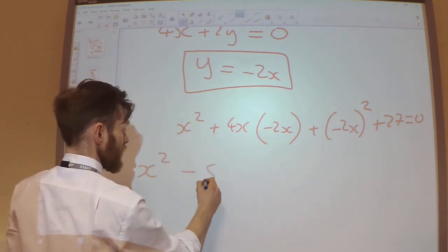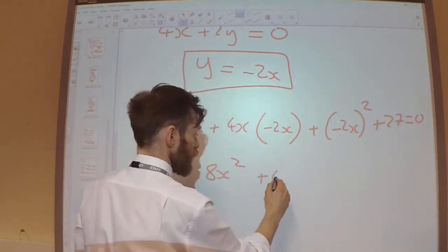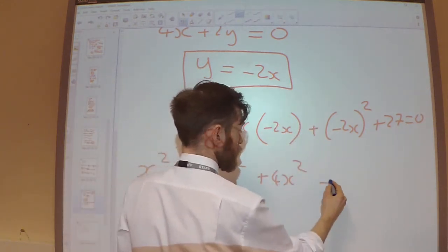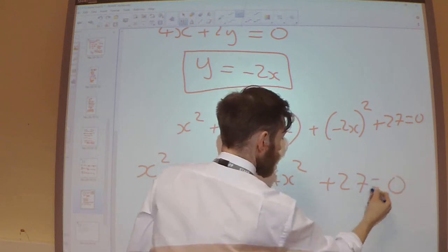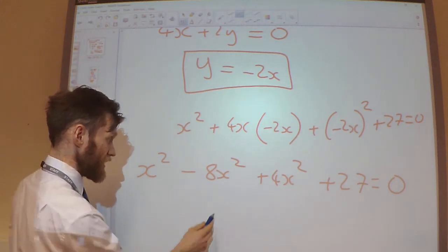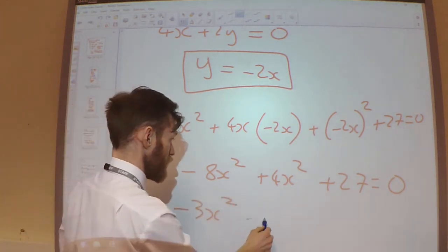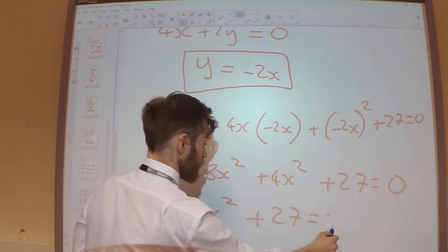So this is going to give me a minus 8x squared. That's going to give me a plus 4x squared. So, collecting up the x squareds, this is going to give me a minus 3x squared plus 27 equals zero.